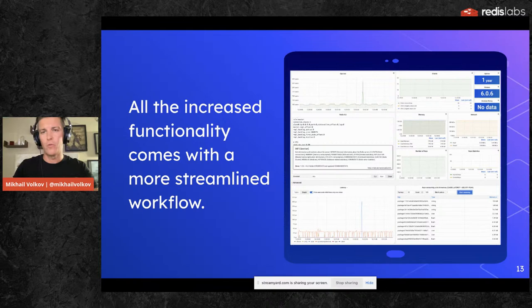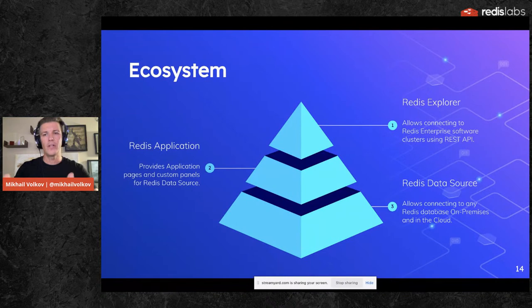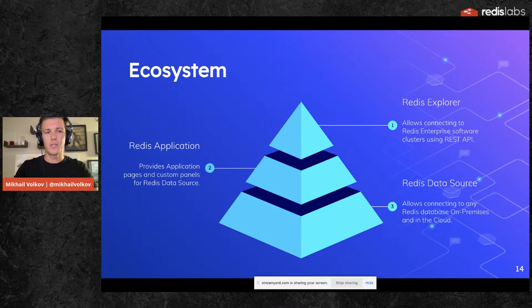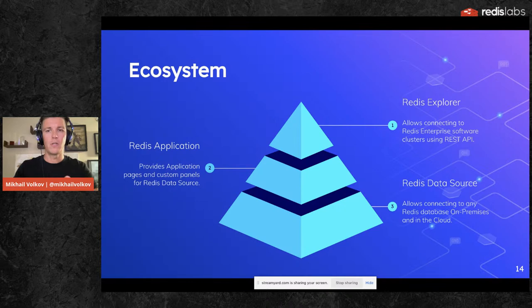Redis plugins for Grafana let you connect Grafana to Redis to visualize more types of data in more ways than otherwise possible, with the most streamlined workflow. When developing projects using Redis, I want to see operations per second, which clients are connected, use Redis CLI with command help, see latency per command, and identify inefficient commands causing latency spikes. All Grafana dashboards are highly customizable. The Redis plugins ecosystem has a base layer — Redis Data Source — allowing connection to any Redis database on-premises or in the cloud, including Redis Enterprise, open source, Azure, and AWS. Then Redis Application provides custom panels, and on top is Redis Explorer for connecting to Redis Enterprise software clusters via REST API.